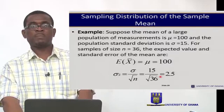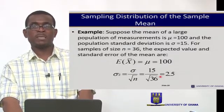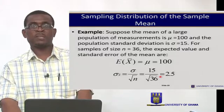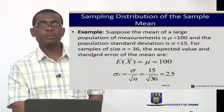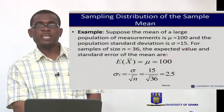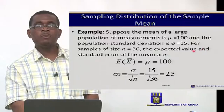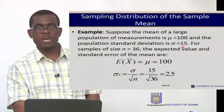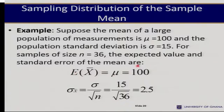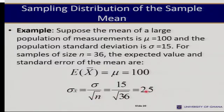For example: suppose the mean of a large population is mu = 100 and the population standard deviation is sigma = 15. If you take samples of size 36, the expected value of the sample mean is 100 — equal to the population mean. The standard error is the population standard deviation divided by the square root of the sample size: 15 over square root of 36, which equals 2.5.